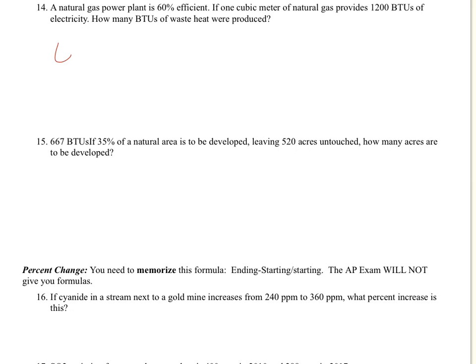We know that it's efficient, 60% of some total. So 60% of X, where X is the total amount, and 60% of some total gives us 1,200 BTUs. Let's go ahead and do this algebraically. So 60% is 0.6, and of is multiplying, so X is our unknown. This equals 1,200 BTUs.